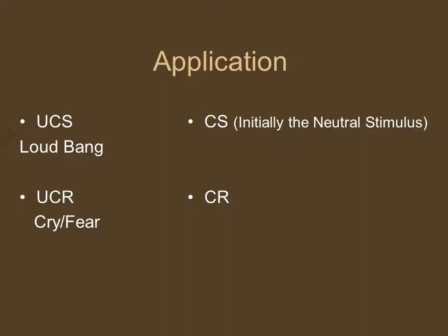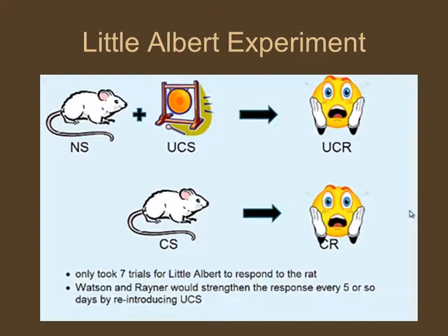What is Albert learning to do? He cries and shows fear, but now what makes him cry is the rat — or anything that's white. That's what they were proving. The neutral stimulus — the rat — eventually becomes the conditioned stimulus. Pair it with the unconditioned stimulus enough times, and the conditioned stimulus causes a conditioned response. It only took seven trials for Little Albert to respond to the rat. Watson and Raynor would strengthen the response every five or so trials by reintroducing the unconditioned stimulus.